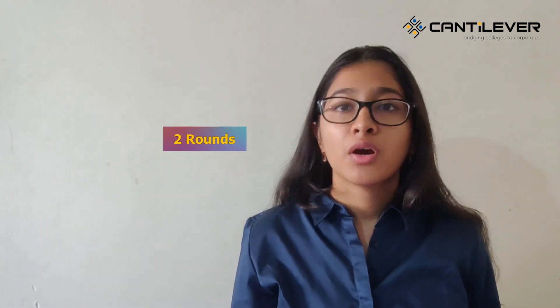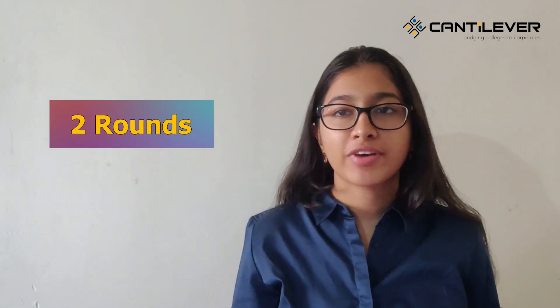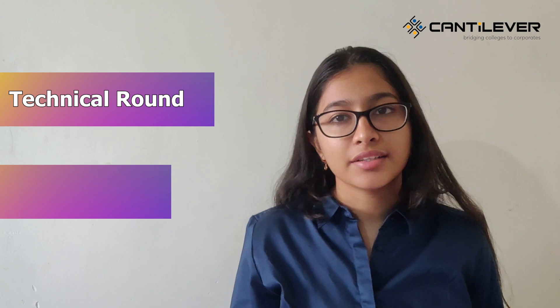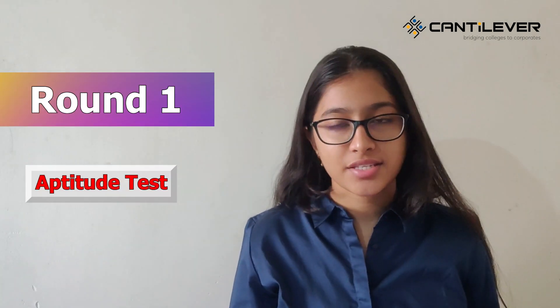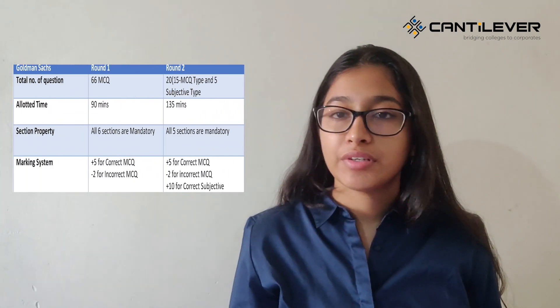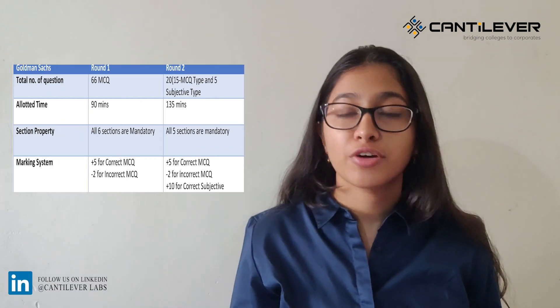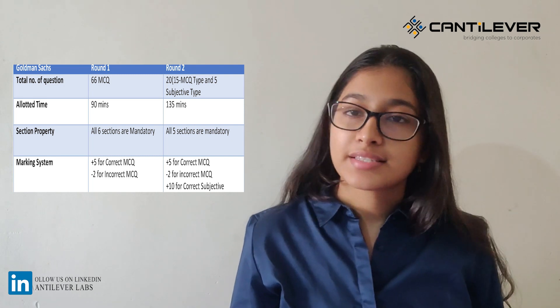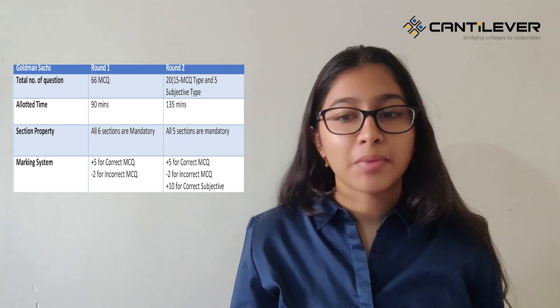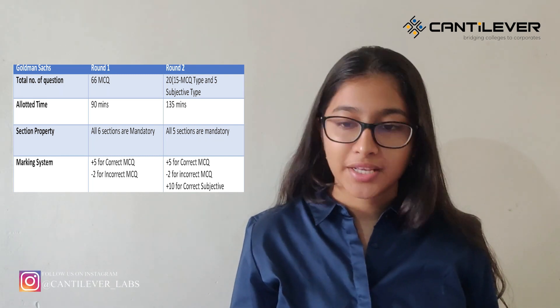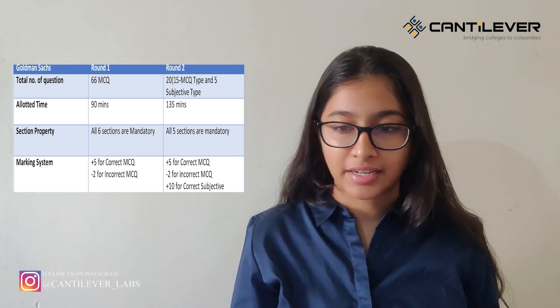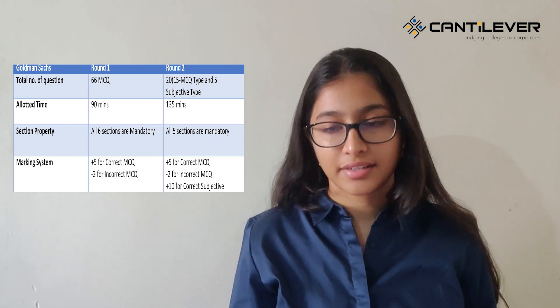Let's first have an overview of its test pattern. Goldman Sachs has two rounds in its off-campus trial — one for the technical round and the other for an aptitude test. For round one, which is the aptitude test, we will have 66 MCQ questions in a time duration of 90 minutes, where 6 sections are mandatory and the marking scheme is plus 5 for a correct answer and minus 2 for an incorrect answer.